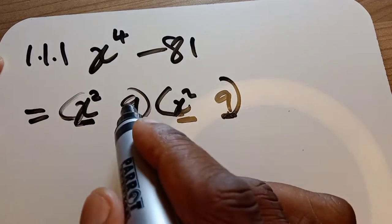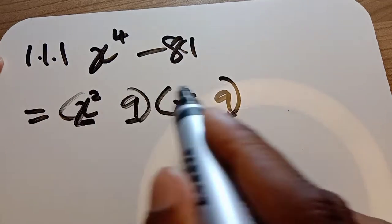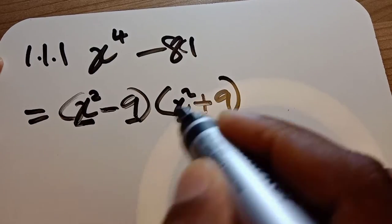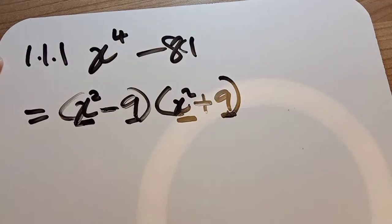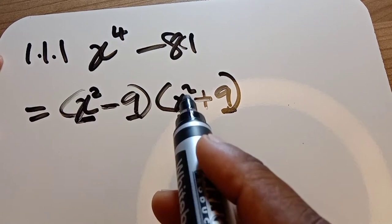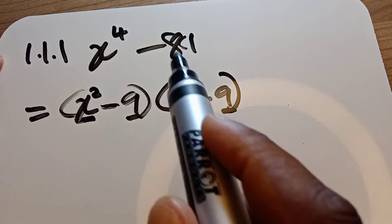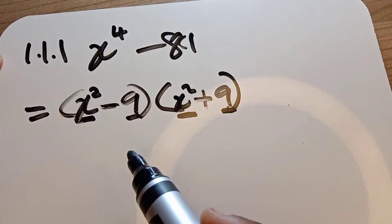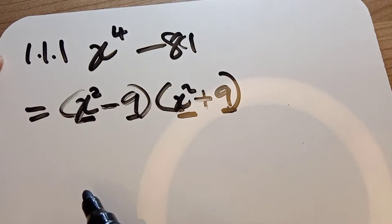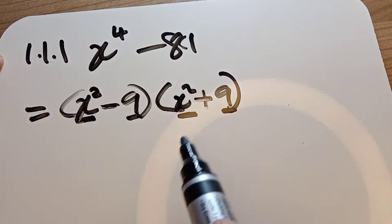Whatever sits in each binomial should be the same, and when you multiply them they should give you 81. The signs should be different — if you have negative here you should have positive there. x squared multiplied by x squared gives x to the exponent 4. Negative 9 multiplied by 9 gives negative 81. The middle terms cancel and give us zero — that's why we call it difference of two squares.